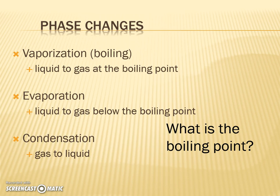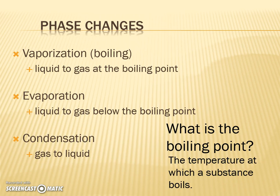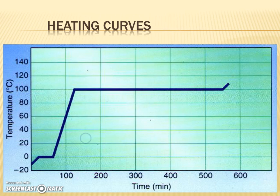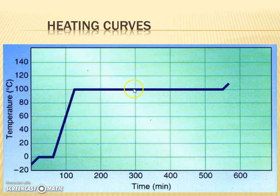The boiling point is the temperature at which a liquid changes into a gas. For water, the boiling point is 100 degrees; for alcohol, it was 82 degrees. These heat curves show that for water, the temperature stays at zero degrees while it melts — it takes a lot of energy to change from solid to liquid — and then the temperature jumps up. Then it stays at 100 degrees while it's boiling until it's all boiled out, and then it can become a hotter temperature.